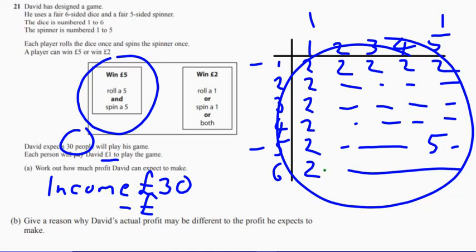Five, two, four, six, eight, ten, twelve, fourteen, sixteen, eighteen, twenty, twenty-five. So minus twenty-five. So how much profit would he make from every thirty people who play the game? We would expect him to make five pounds.